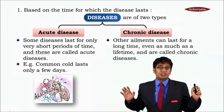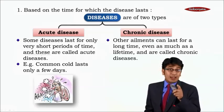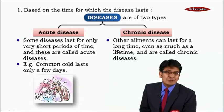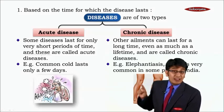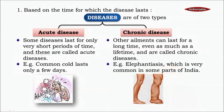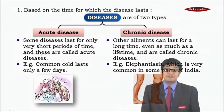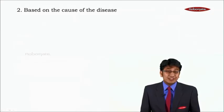Chronic diseases are ailments which can last for a long time, even as much as a lifetime. These diseases come and they don't go — they are with you for years and years, affecting you and making you very unhealthy. An example is elephantiasis, a very common and dangerous disease in some parts of India, especially Kerala.